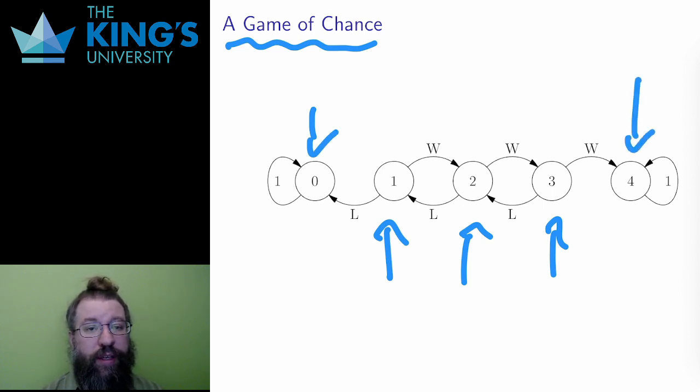I'll start with a winning condition of four stakes, and this gives me a five vertex model. The player can be at zero, one, two, three, or four stakes. At zero and four stakes, the game is finished.